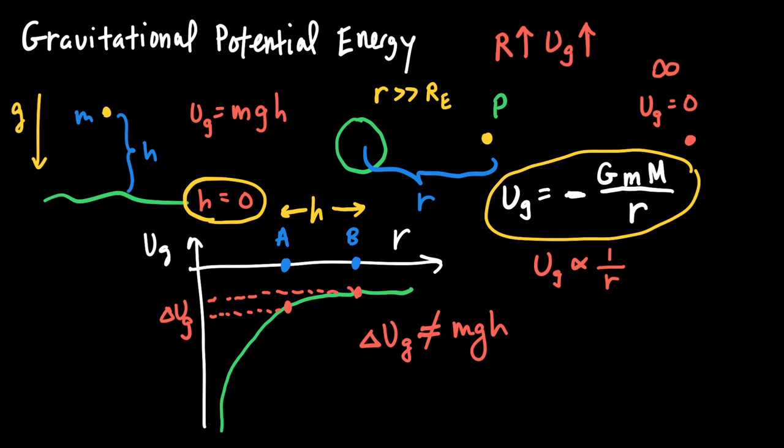Another feature of the graph is that as r increases more and more, we get closer and closer to where the gravitational potential energy approaches zero. The graph is asymptotic — we can never actually reach the place where Ug equals zero, but we can get very close.